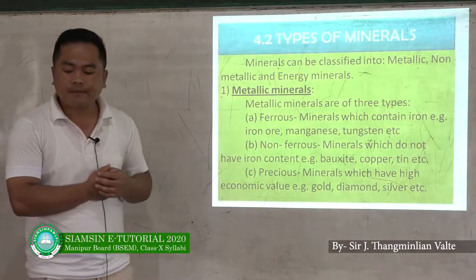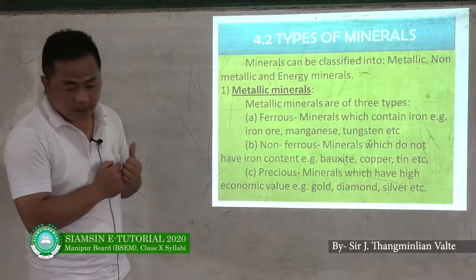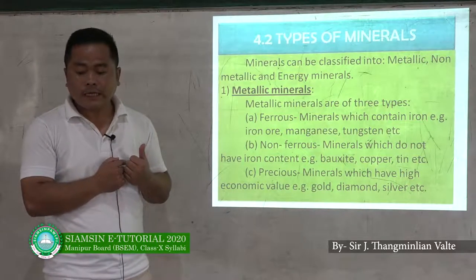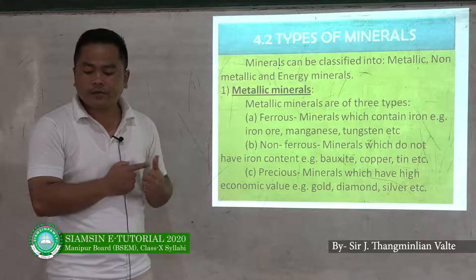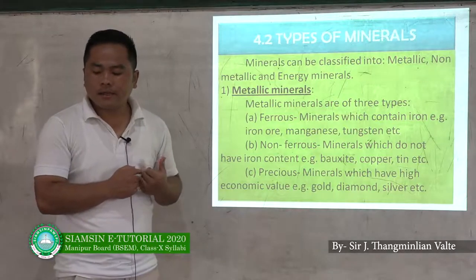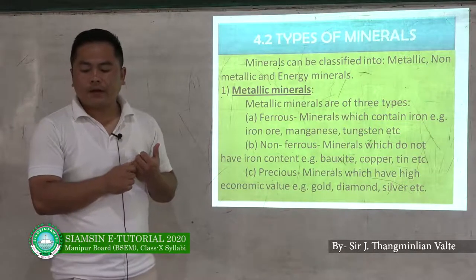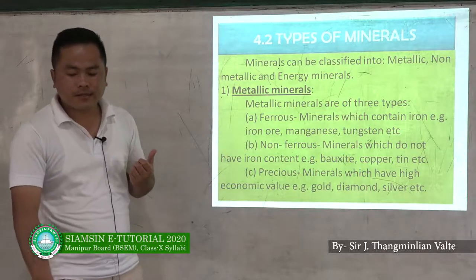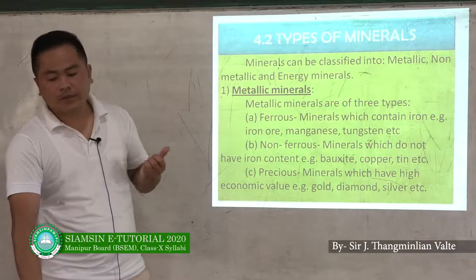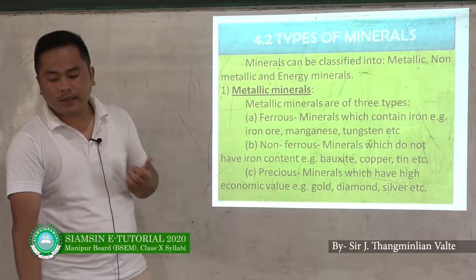The types of metallic minerals include ferrous minerals. Ferrous minerals are those which contain iron. For example, iron ore, manganese, and tungsten.